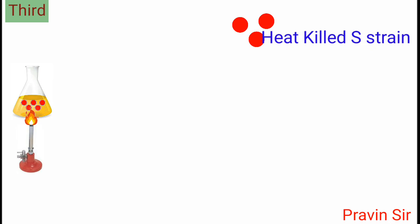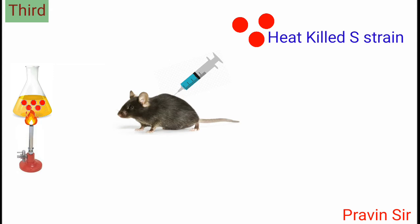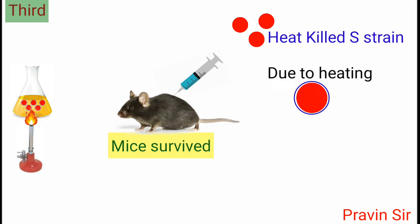Third, Griffith heated the S strain. This heat-killed S strain was then injected into mice. The mice survived. The reason was that due to heating, the S strain lost its polysaccharide coat.